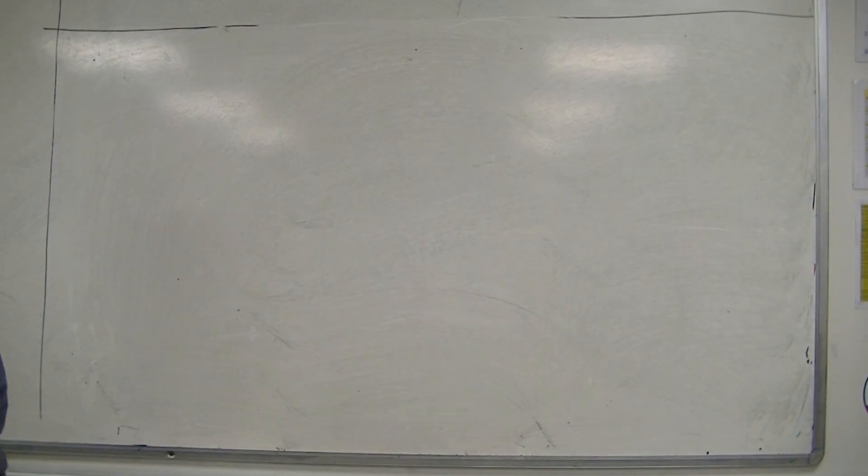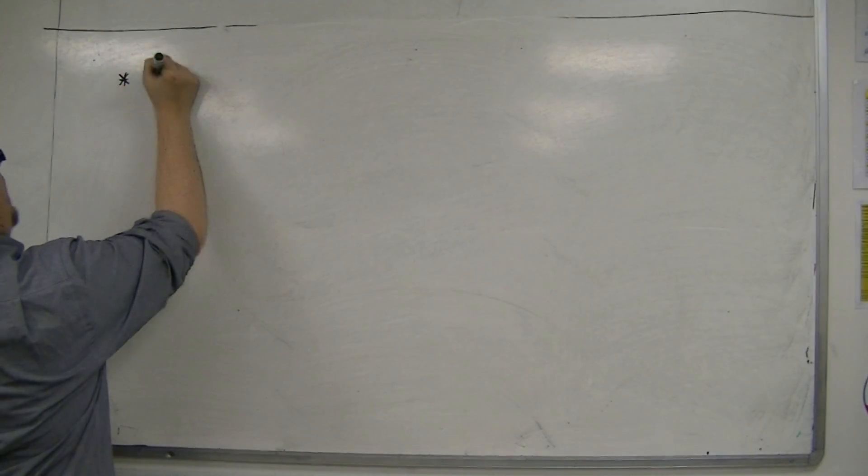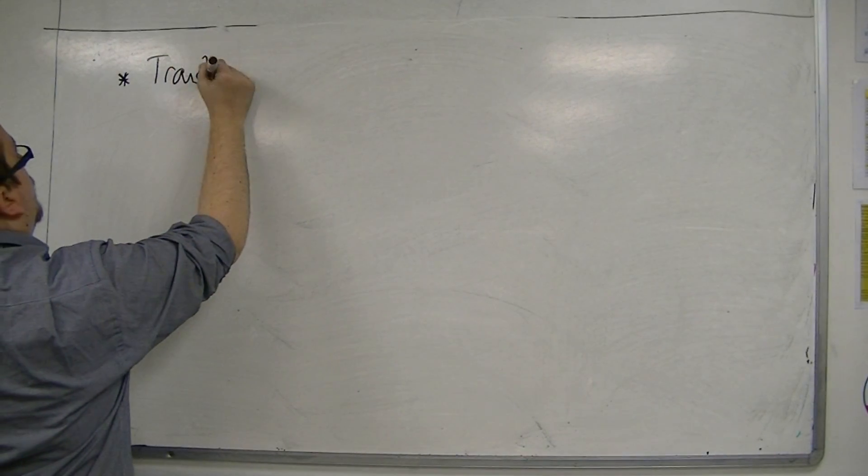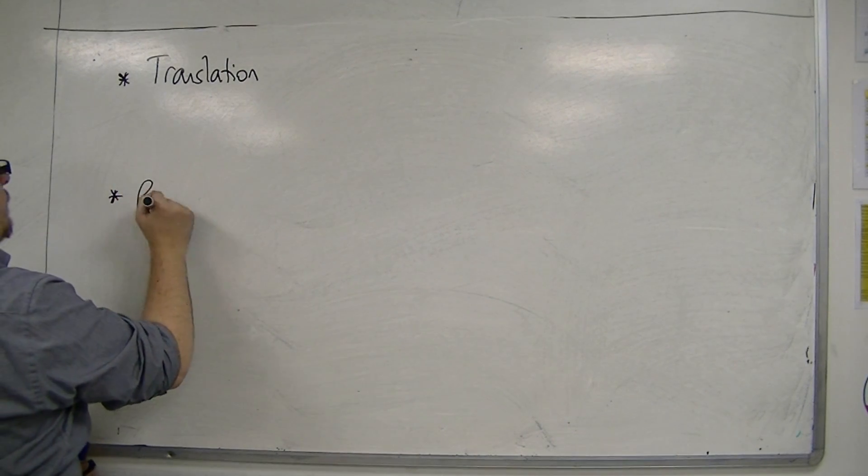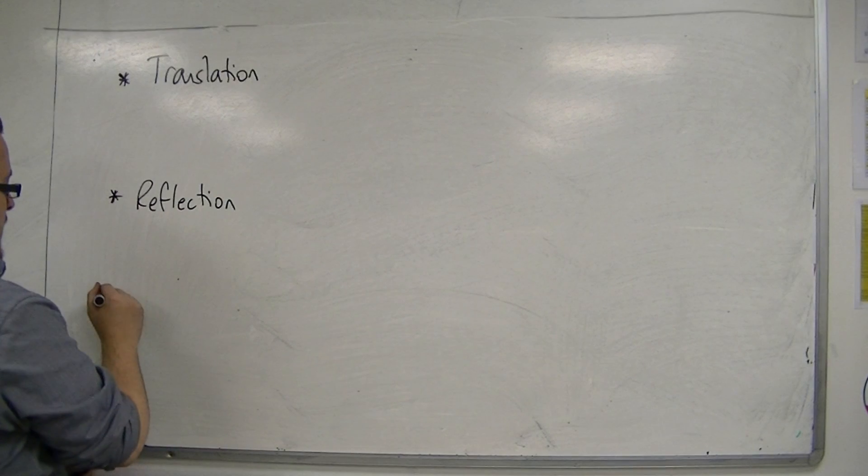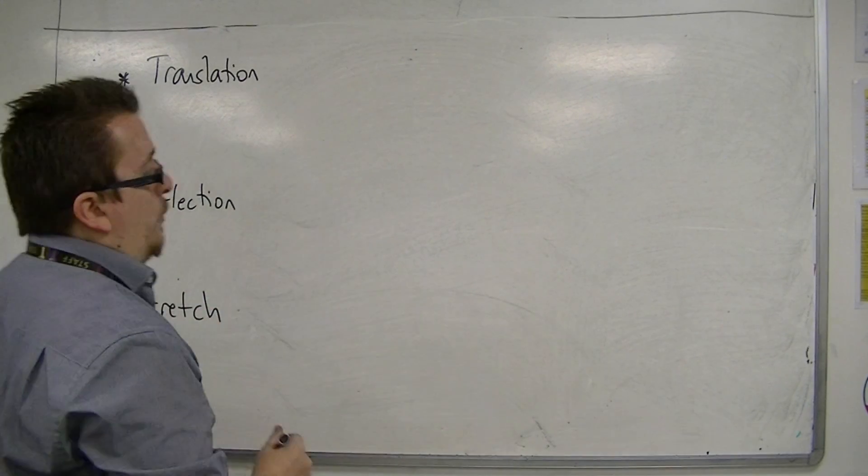So the three types of transformation that we have are translation, we have reflection, and we have stretch or stretching.